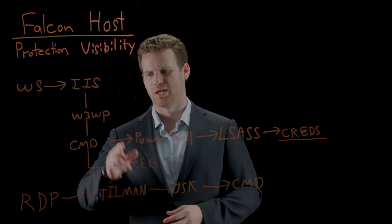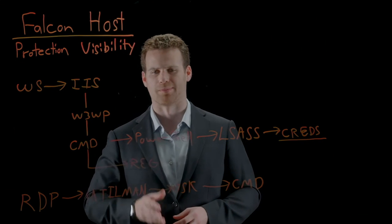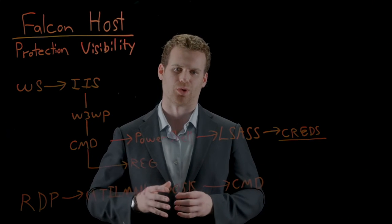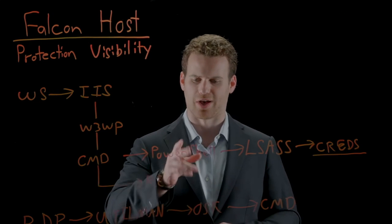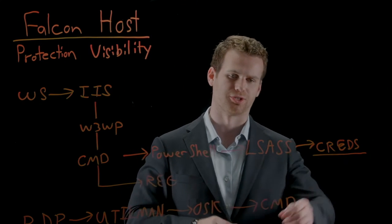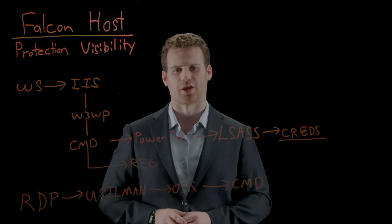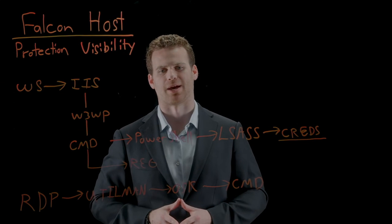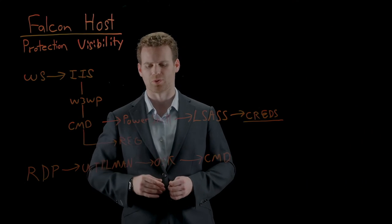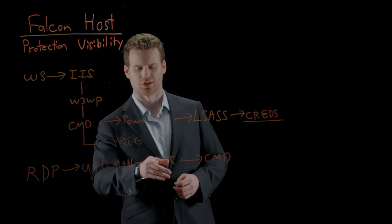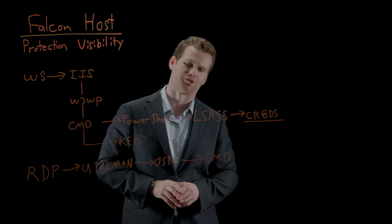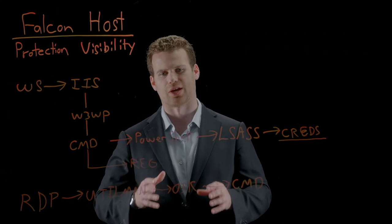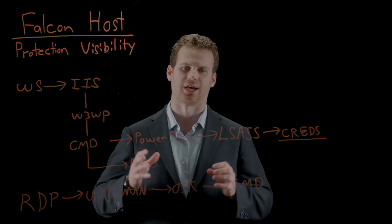Let's start with the web shell. As soon as Falcon sees the worker process spawning a command prompt, that in and of itself is enough to behaviorally tell us that a web shell has been deployed to our web server. Next, when Falcon sees PowerShell injecting into LSASS to steal credentials, we get our second indicator of attack. Our third indicator of attack is triggered when Falcon detects the registry being modified in such a manner to bypass login security. And finally, when the adversary attempts to use that login bypass to cause the on-screen keyboard to spawn a command prompt, that triggers our fourth and final indicator of attack. These are just four examples out of the hundreds of different IOAs that Falcon Host can use to detect malware-free attacks.